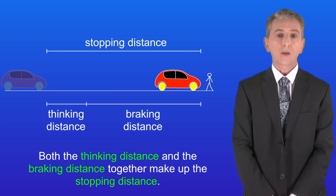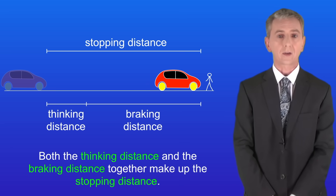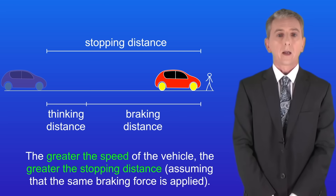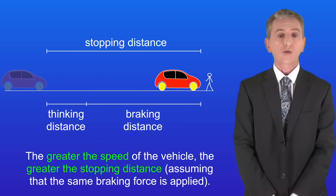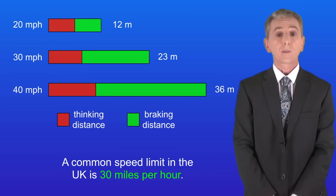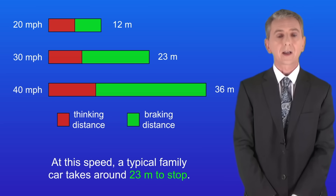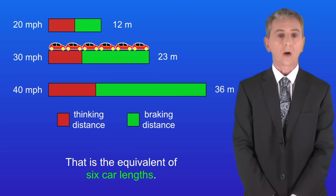Both the thinking distance and the braking distance together make up the stopping distance. The greater the speed of the vehicle the greater the stopping distance, assuming that the same braking force is applied. I'm showing you here how the stopping distance varies with speed for a typical family car. A common speed limit in the UK is 30 miles per hour. At this speed a typical family car takes around 23 metres to stop — that's the equivalent of six car lengths.